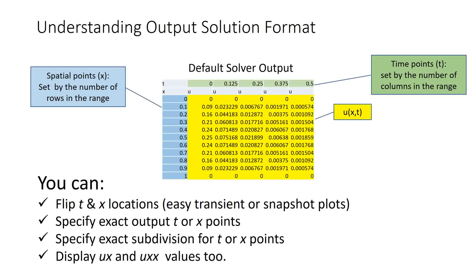By default the solver reports the solution U, X and T at equally spaced X points in the first column and T points in the first row. The spacing of the points depends on the size of the allocated Excel array. If you allocate a larger array for the solver you get more points.